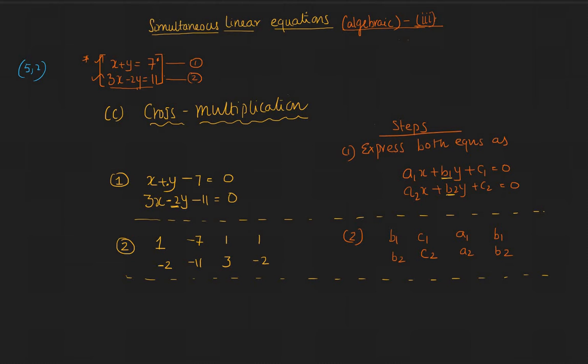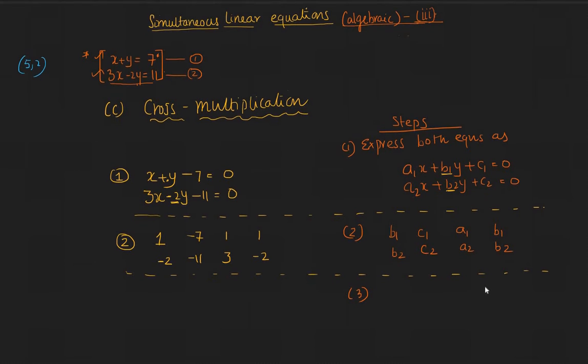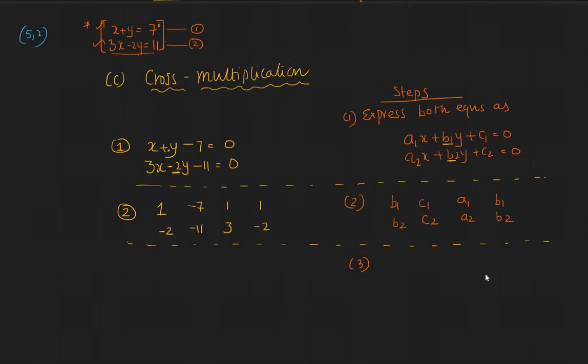Now the third step involves expressing the equation like this. What you need to do is to mark the arrows. Let's mark these arrows. The first one going down and this one is going up, this is going down and this is going up, and this is going down and this is going up.